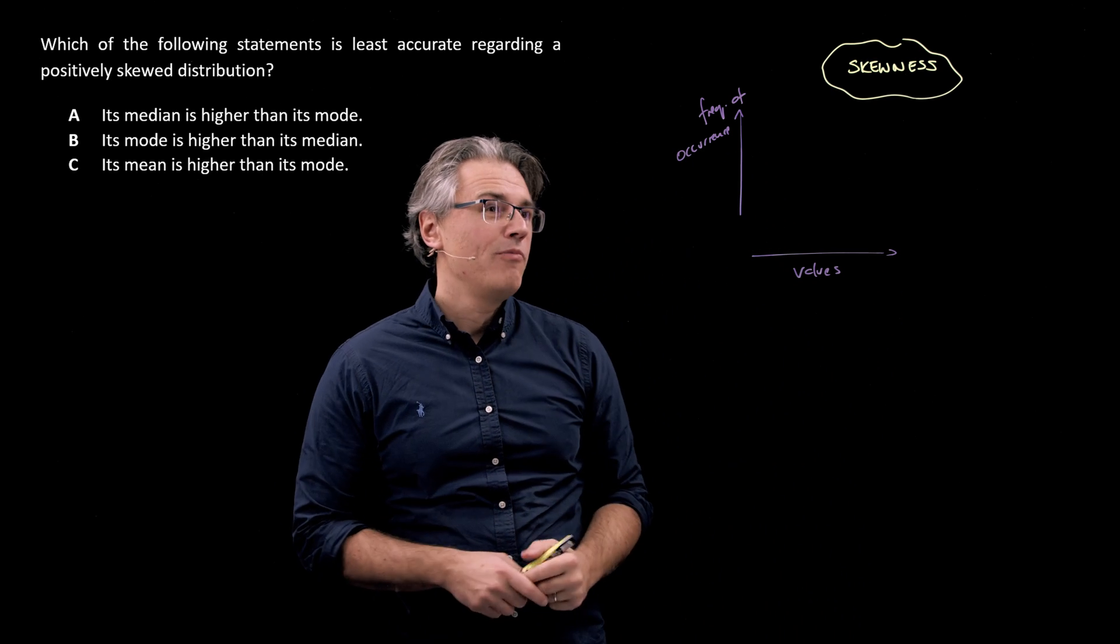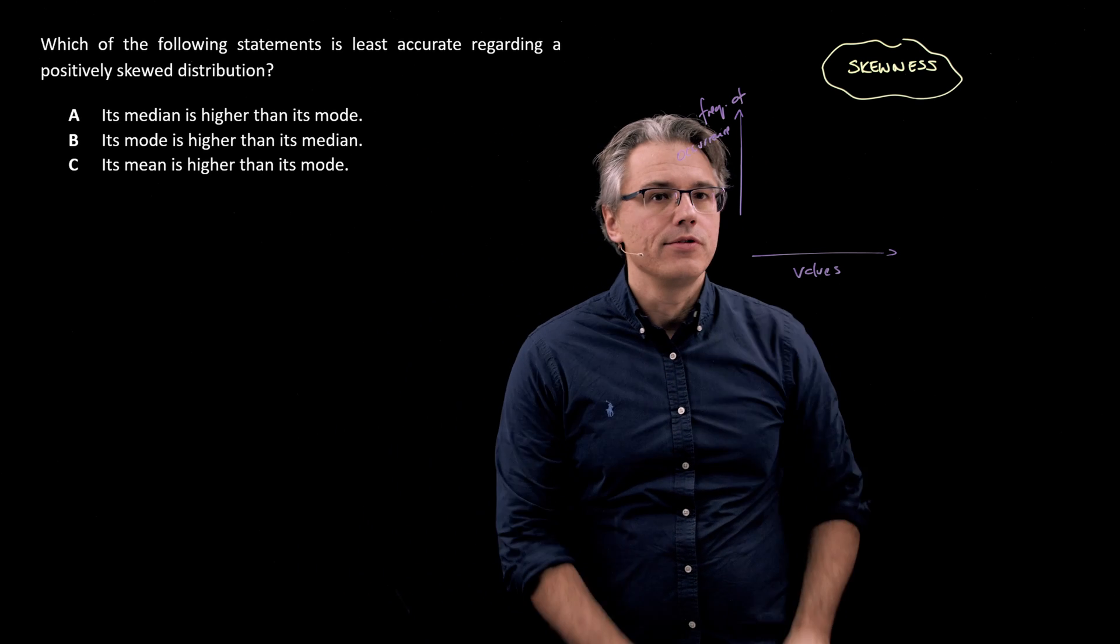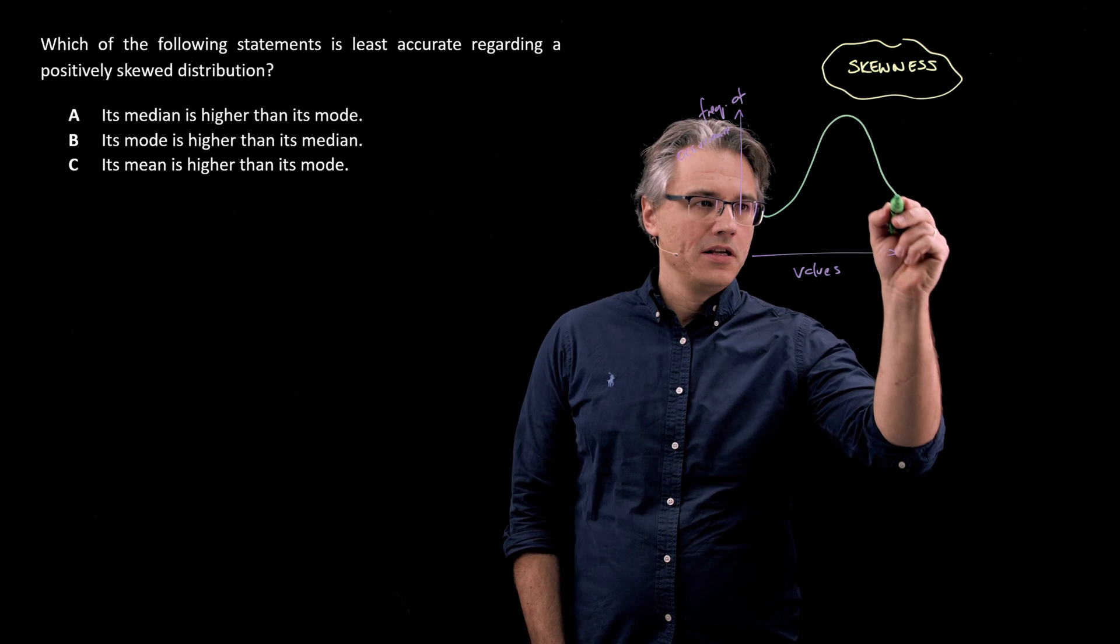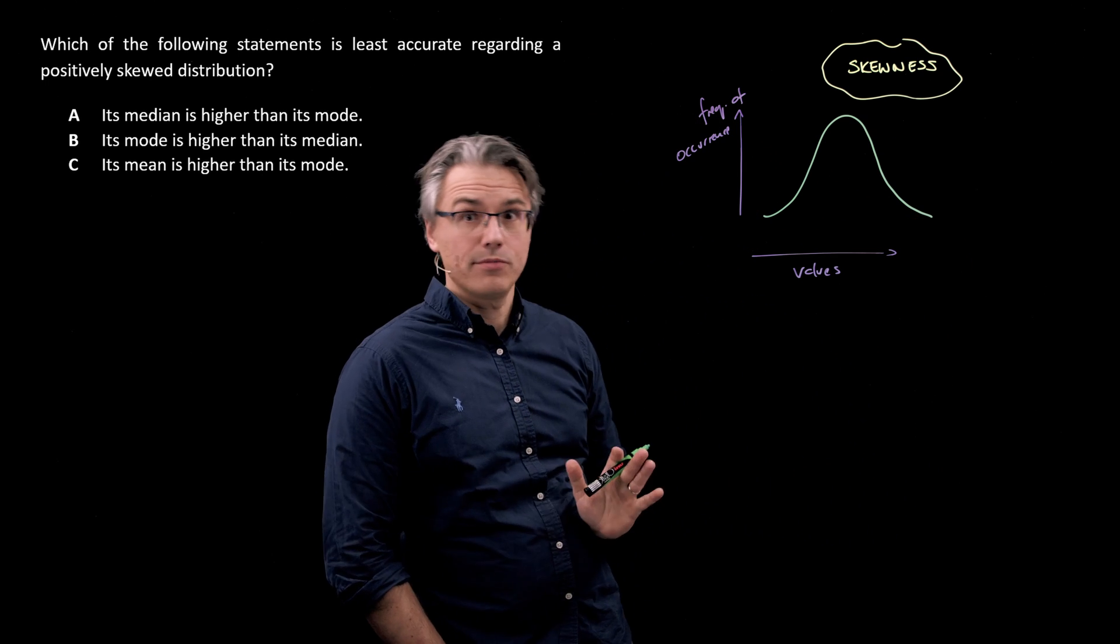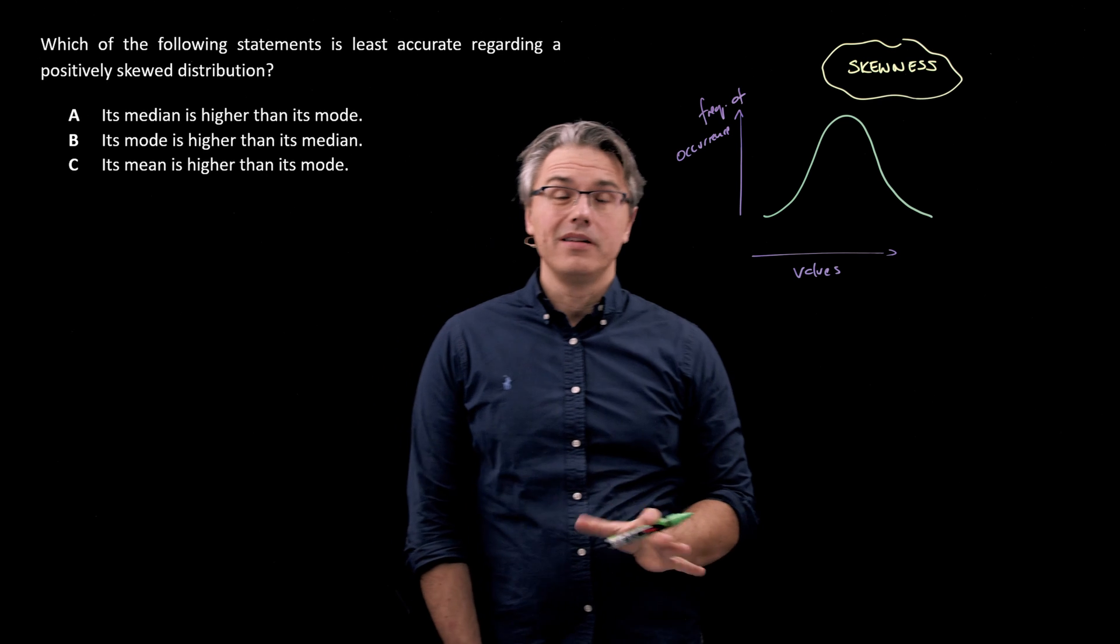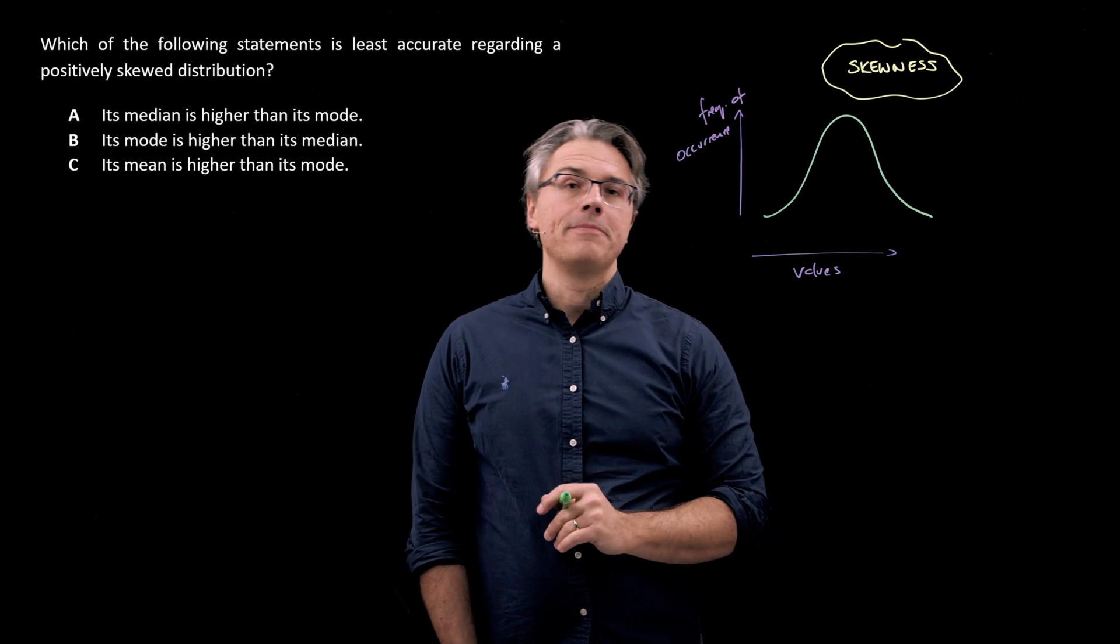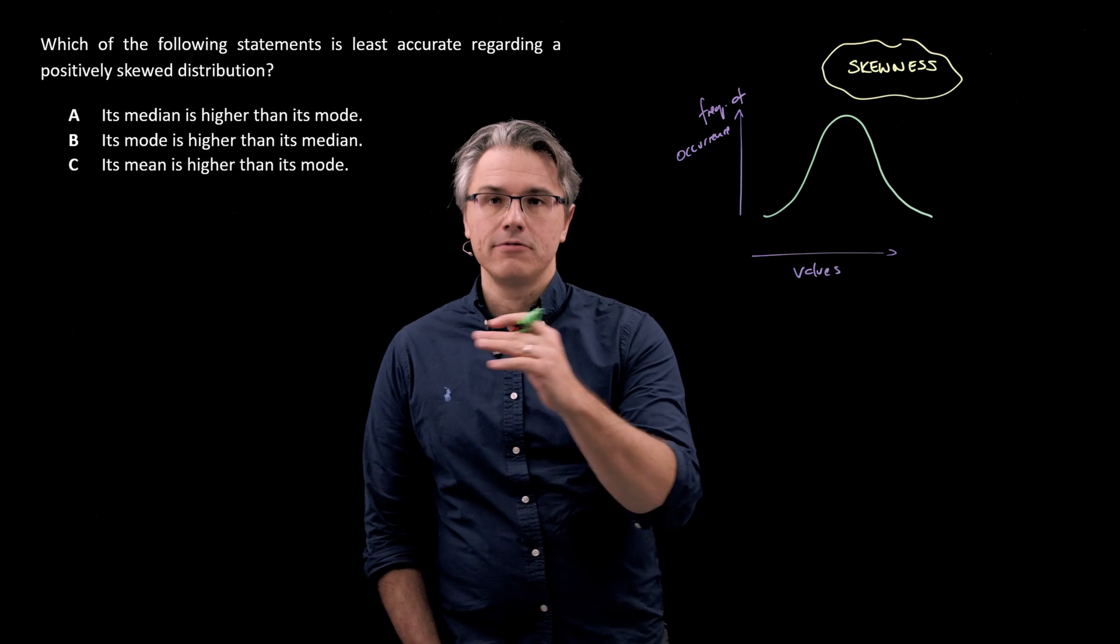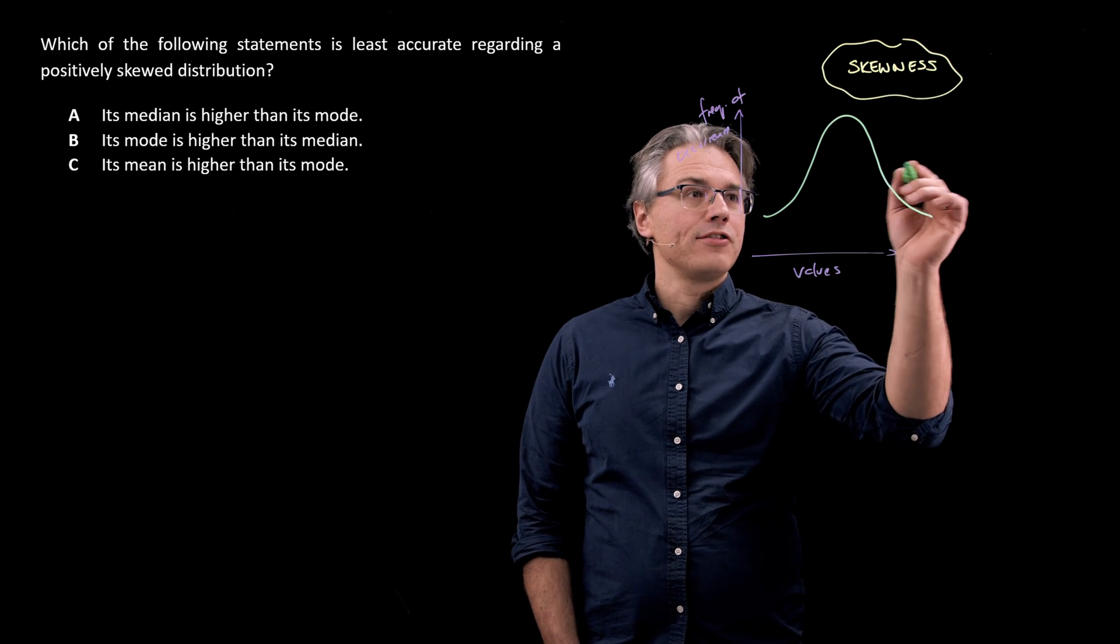And the most obvious simple distribution shape you're going to see is the symmetrical one, which is often associated with the normal distribution. The normal distribution is symmetrical, but it's not just the symmetry which makes it normal. There is another parameter called kurtosis which we'll tackle in a separate question.